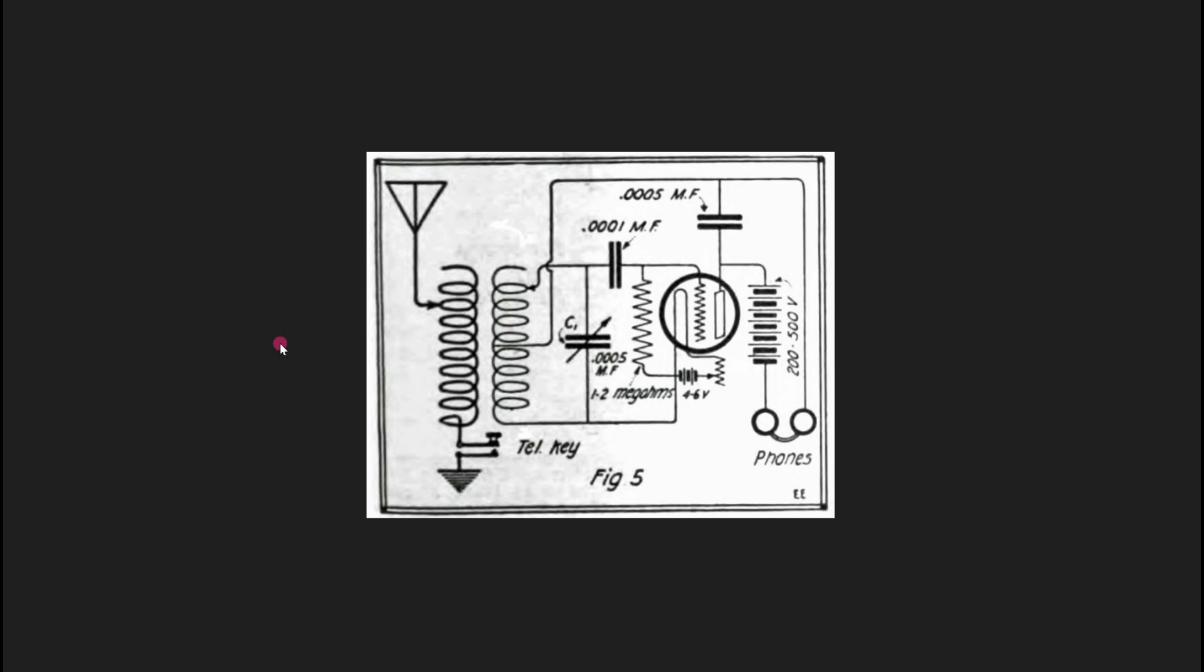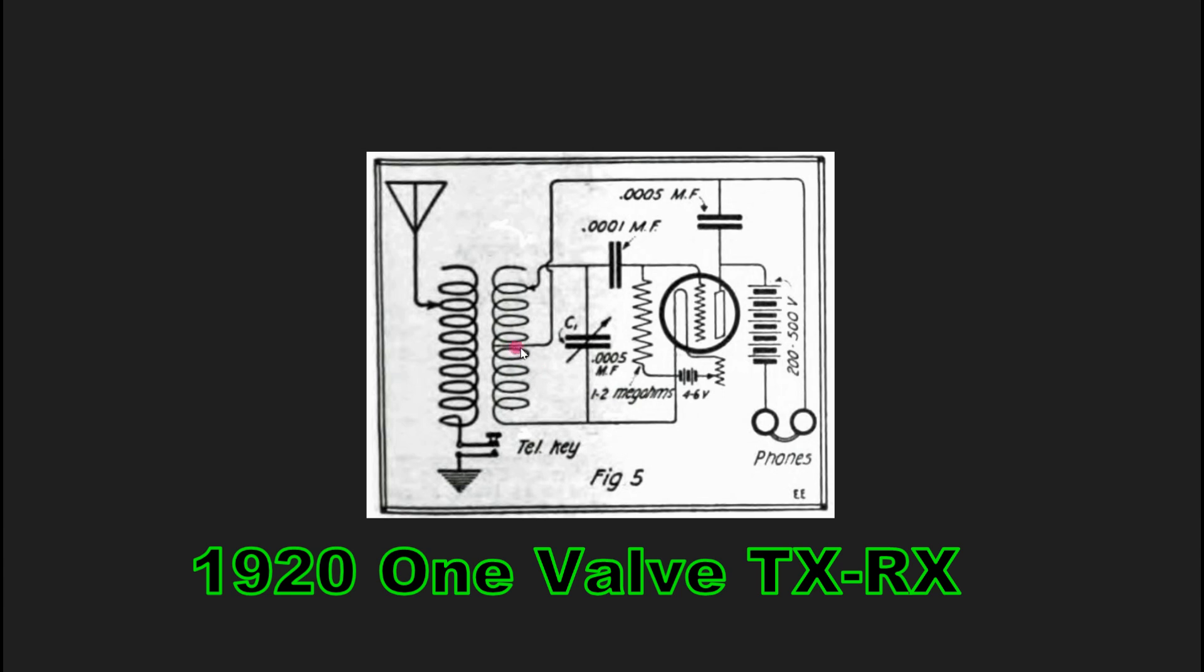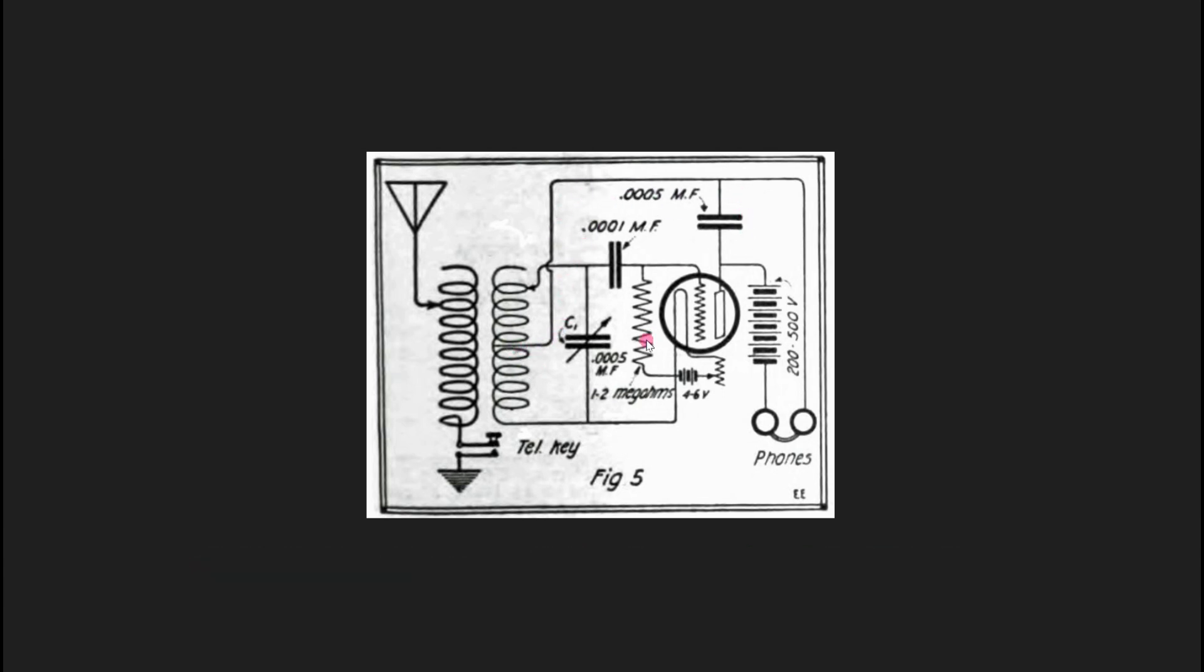So why are one and two tube transmitter receivers so interesting to people? Well, it goes way back. Here's a diagram from 1920 Radio Experimenter magazine. It is a high power Hartley oscillator. You can see it's a Hartley. And they're keying this Hartley oscillator in the ground.